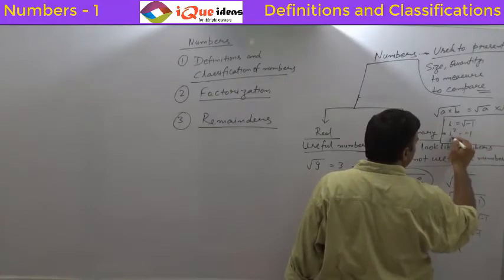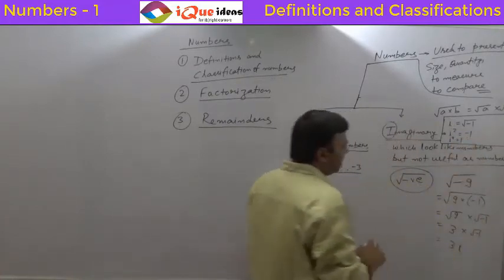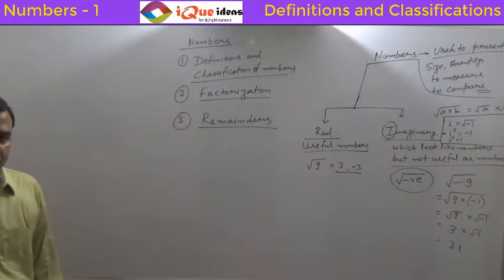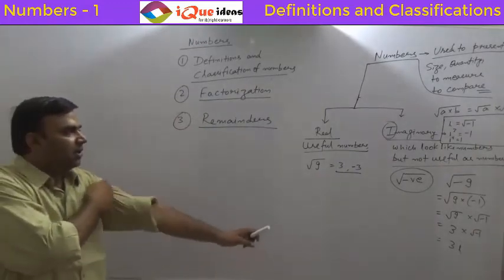If you further square it, you will get i to the power 4 which is equal to 1. That is the maximum that you need to know about imaginary numbers. Other than that, that is not important for us.